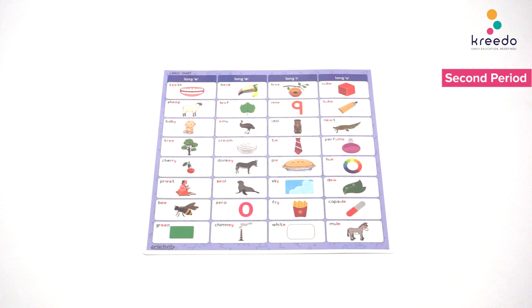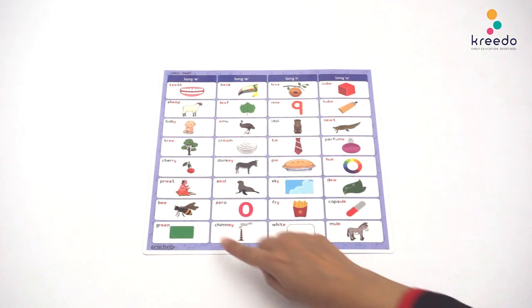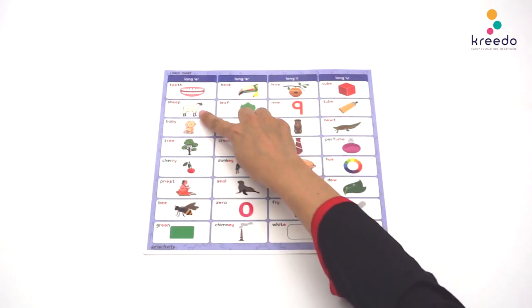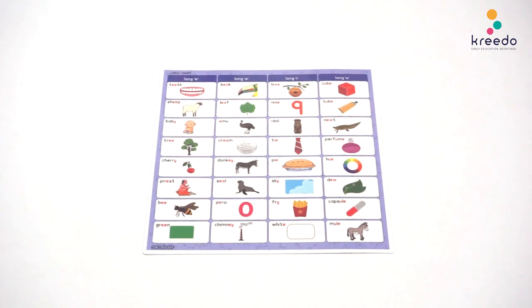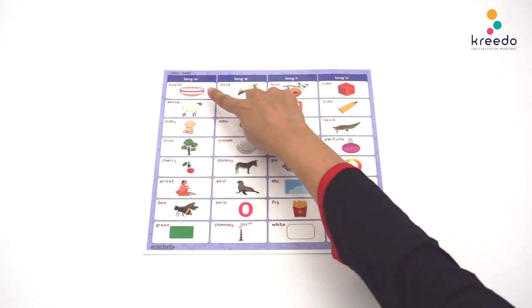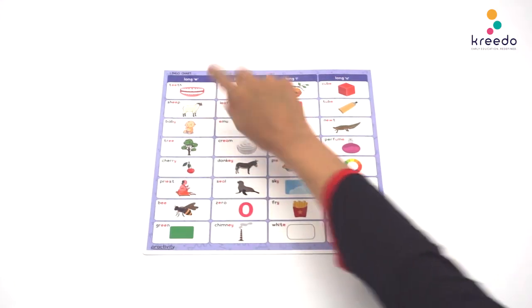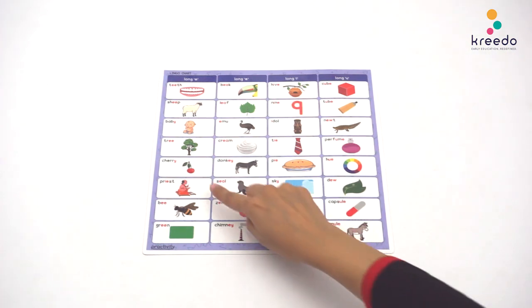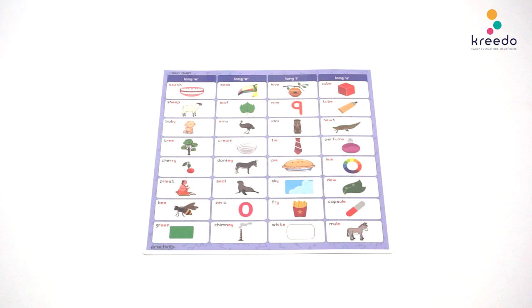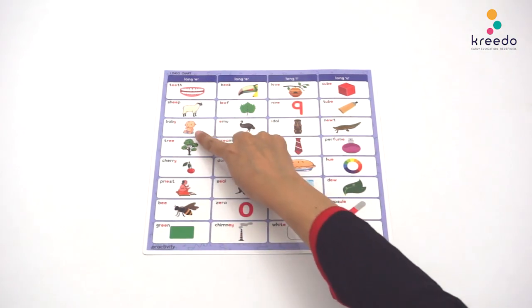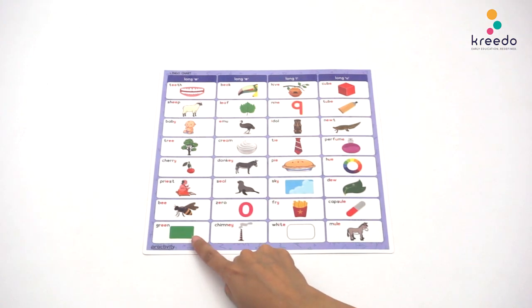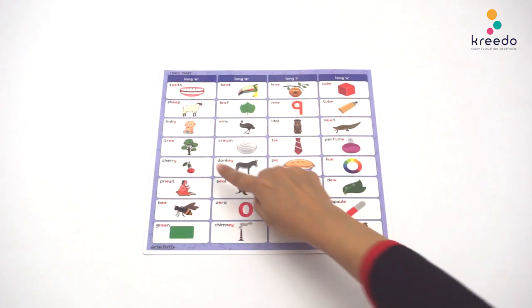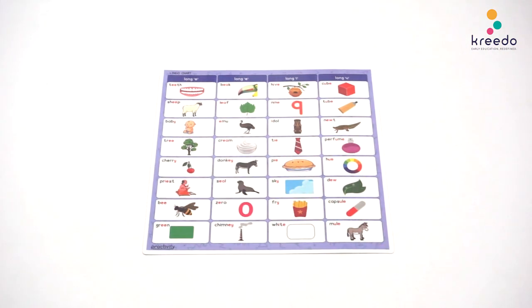Tell a word and ask the child to show it to you. Wait for the child to point it out. Show me the sheep. Show me the bee. Show me the teeth. Show me the cherry. Show me the baby. Show me green. Show me the tree. Show me the priest.